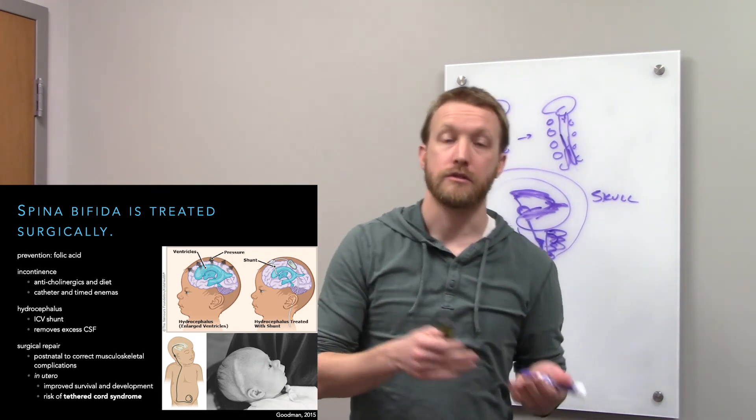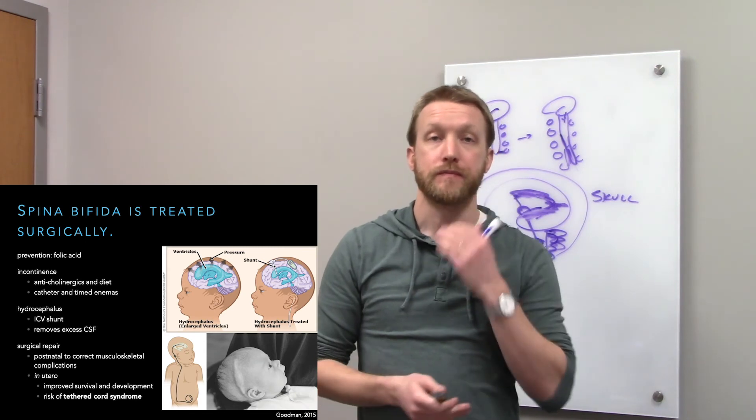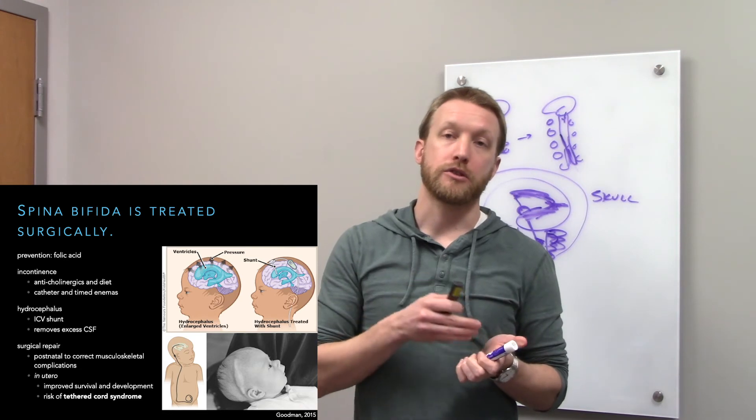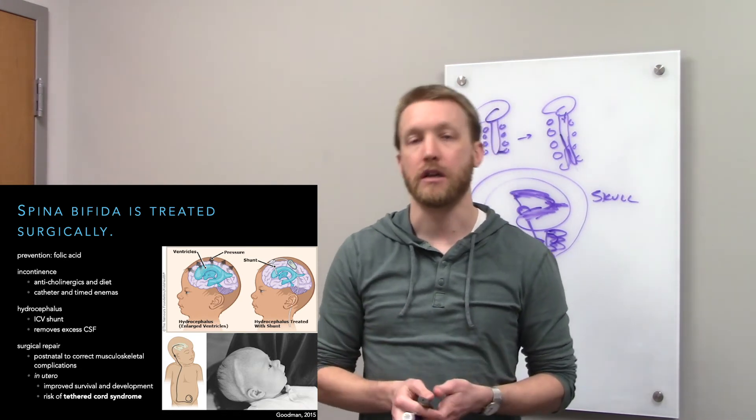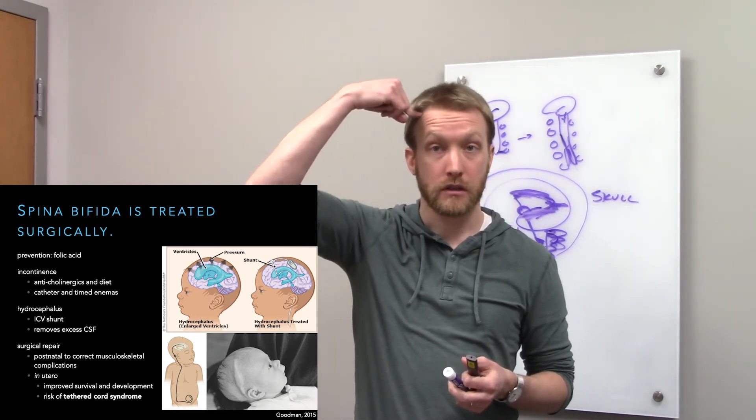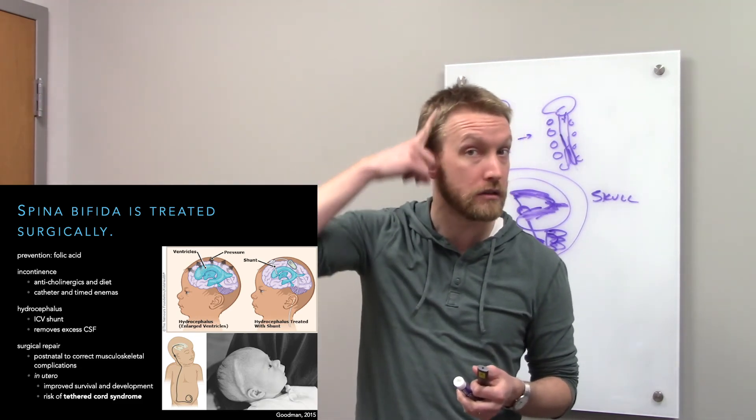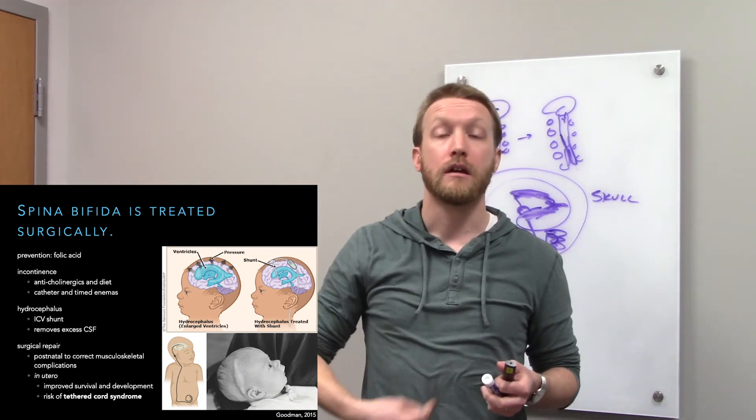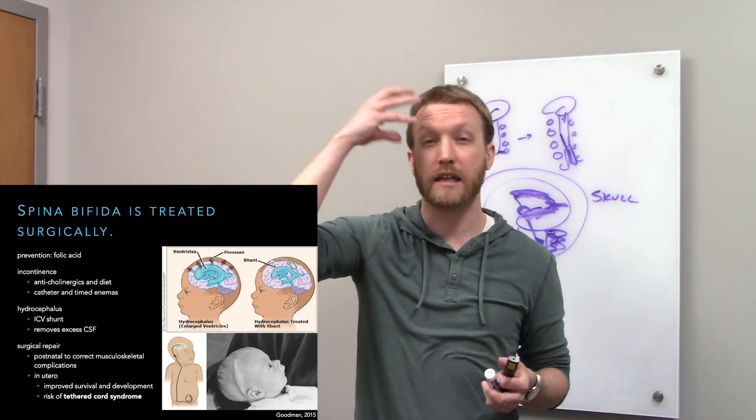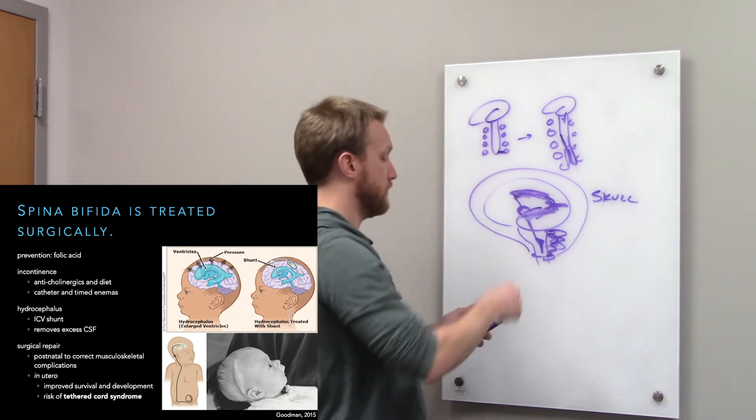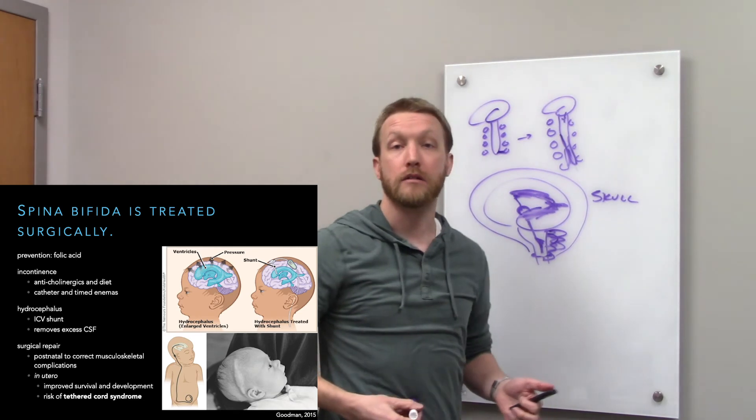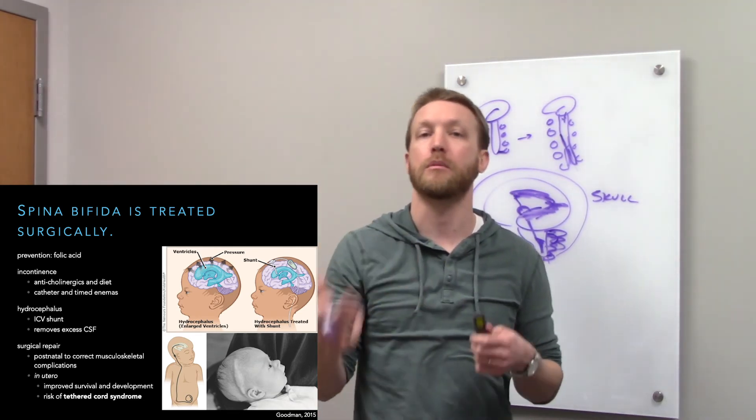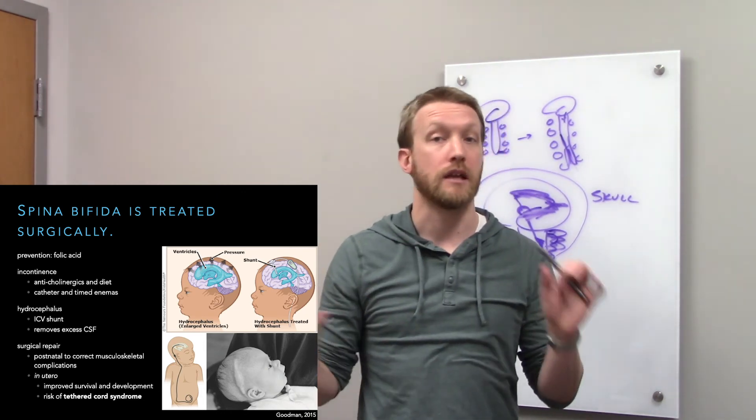We can also use catheters, timed enemas. The hydrocephalus is treated by putting in an intracerebroventricular shunt, an ICV shunt. This is just going to pull fluid out of the ventricles. You can see the catheter on the baby's head there. It's going to run a line down into the intraperitoneal cavity. We're going to move that excess fluid out of the ventricles, there they are, and into the gut, where it'll just be reabsorbed. All good. It doesn't build up in the head. We don't build up pressure, start pushing on neurons. That's never a good thing.